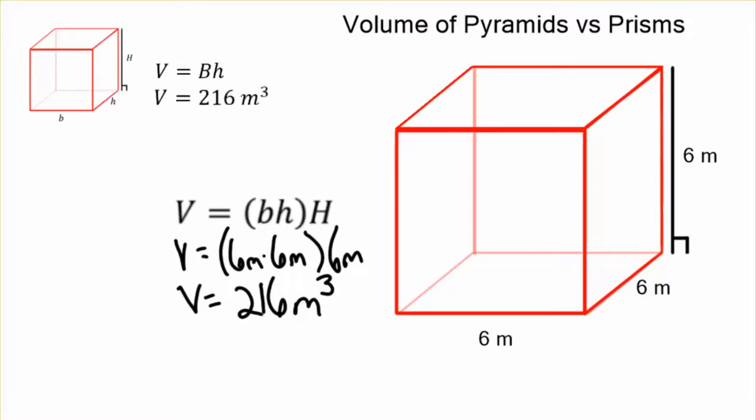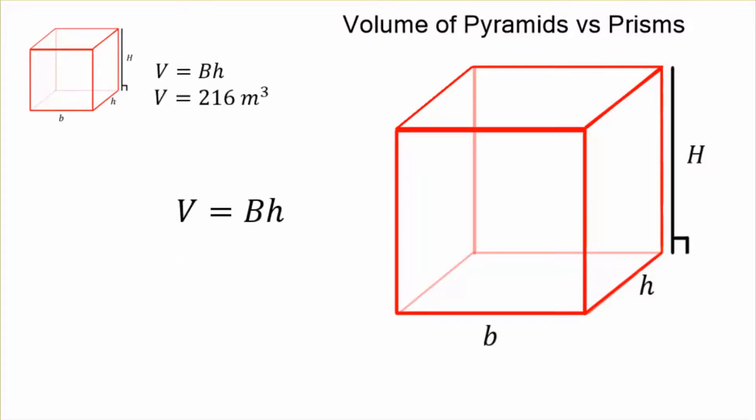So there's the volume of our prism. We're putting that right in the corner. Volume equals base times height, and the volume for that is 216.